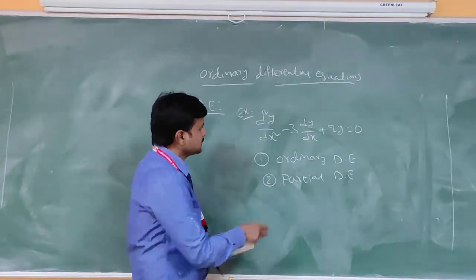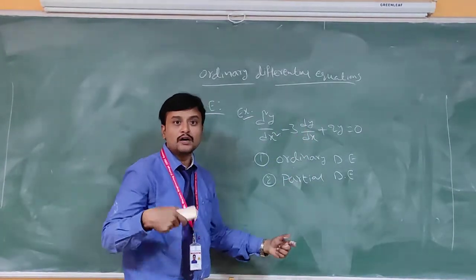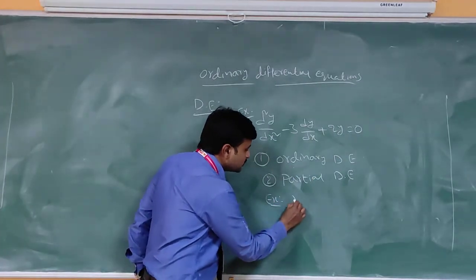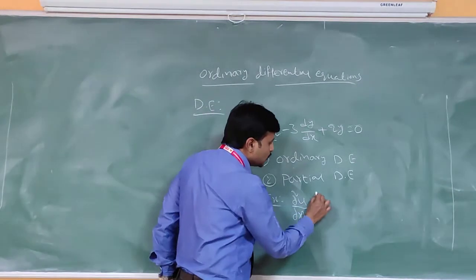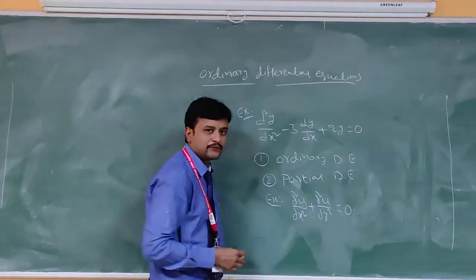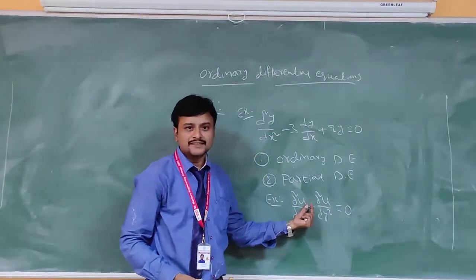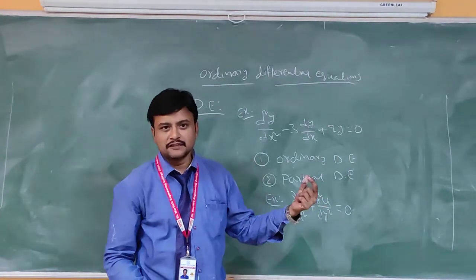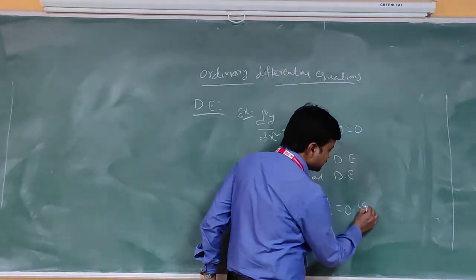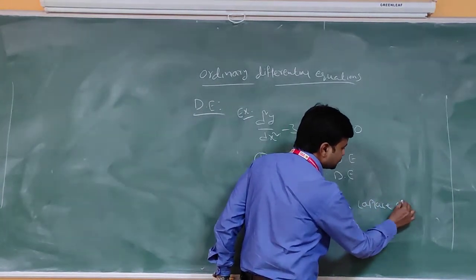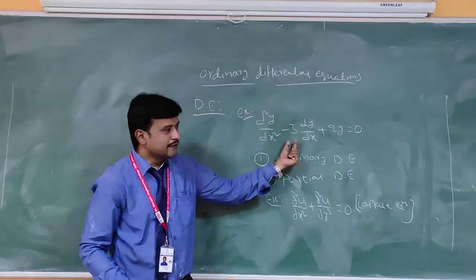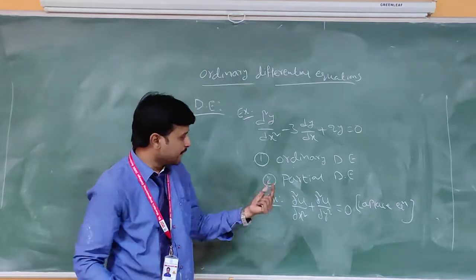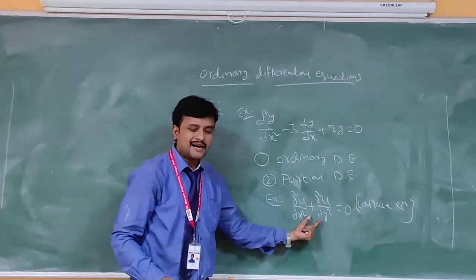Now for the partial differential equation: an equation which involves one dependent variable with respect to two or more independent variables is called a partial differential equation. For example, ∂²u/∂x² plus ∂²u/∂y² is equal to 0. Here u is the dependent variable and x, y are two independent variables. This is called a partial differential equation, also called Laplace's equation. If the equation has a single independent variable it is an ODE; if two or more, it is a PDE.